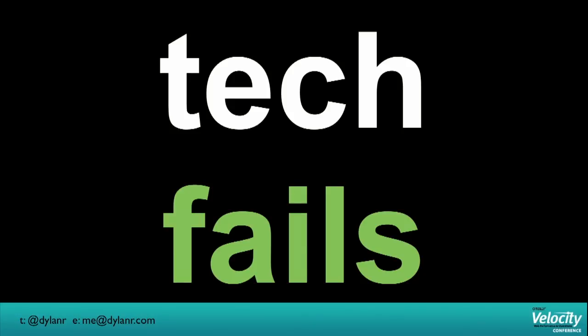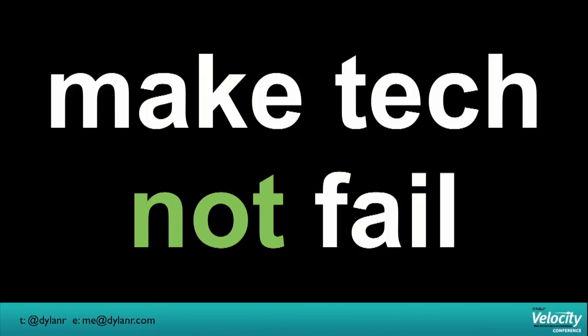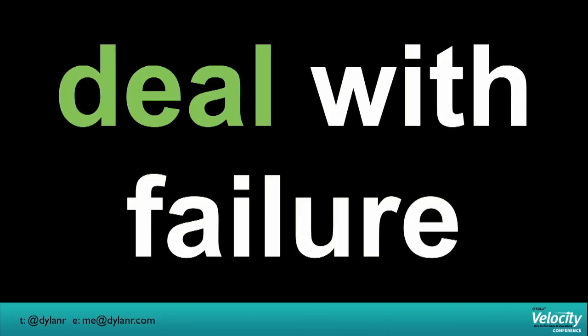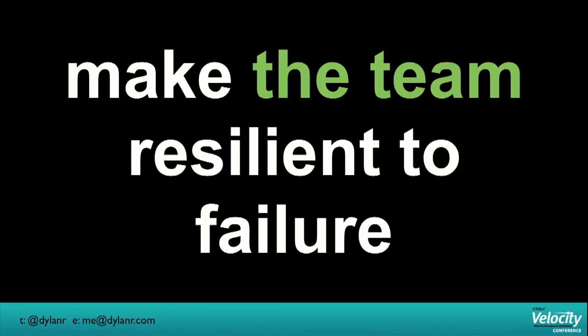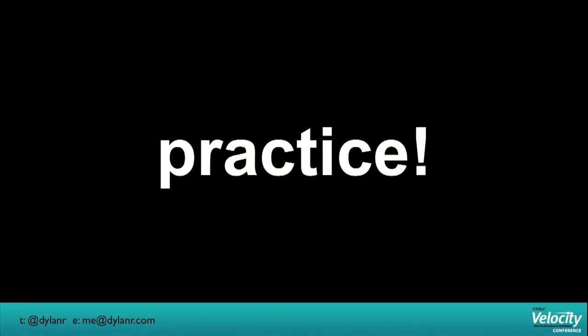However, technology fails. So there are two options of what we can do with that: either we can make sure that the tech doesn't fail, or we can learn how to deal with failure. So the first one — making sure that the tech doesn't fail — we're going to try that. You're going to try everything in your power to make sure it doesn't fail, but sometimes there are things that are out of your control. Say for instance you have a bunch of stuff in a data center in Virginia and there's a hurricane headed directly for Virginia — hypothetically. You may not be able to prevent that from happening. So work on that, but make sure that you also work on making the team resilient to failure. And the way that you do that is you practice, practice, practice.